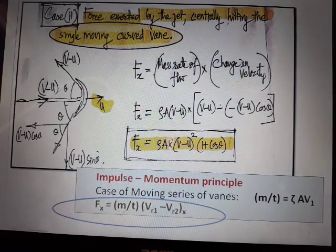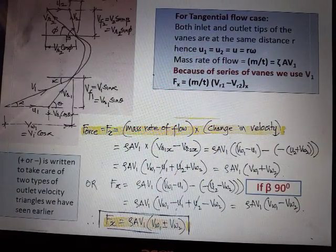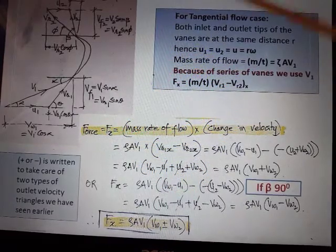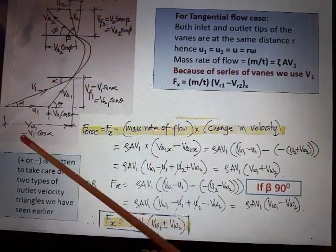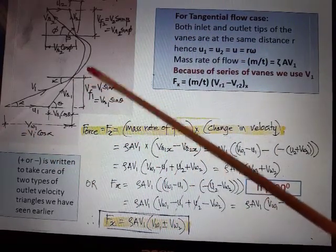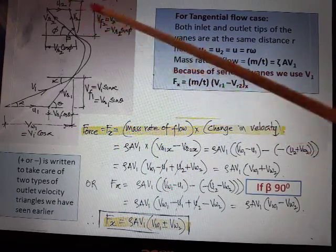So you will be knowing this: there are inlet velocity triangle, outlet velocity triangle, and components of the velocities - the velocity of whirl, velocity of flow. Here also velocity of whirl and then velocity of flow.